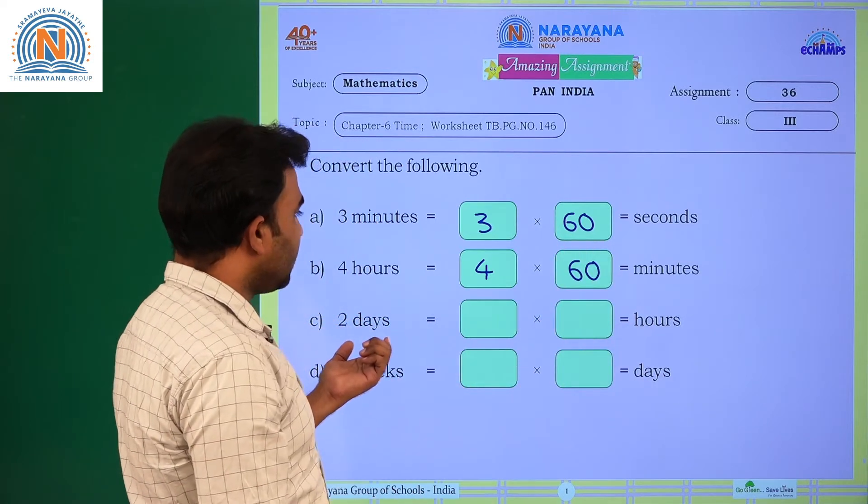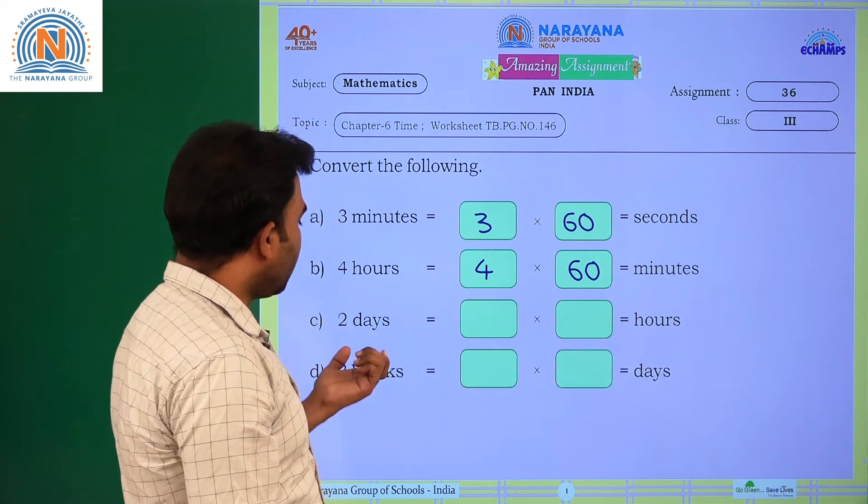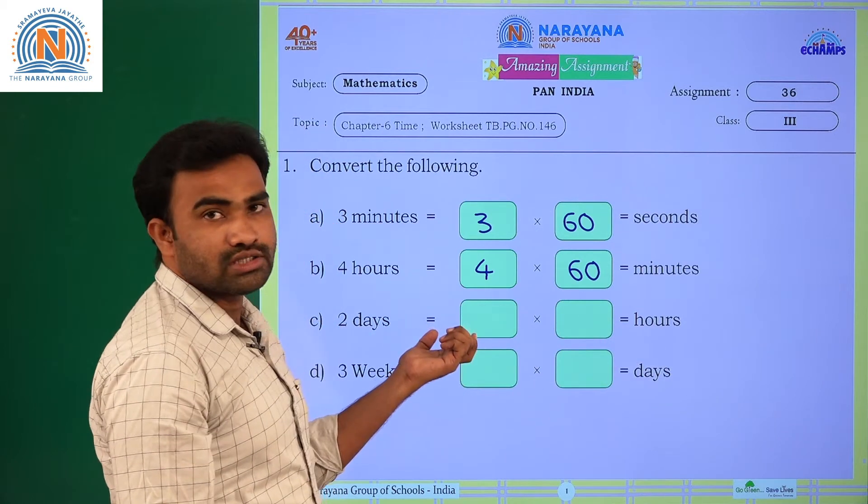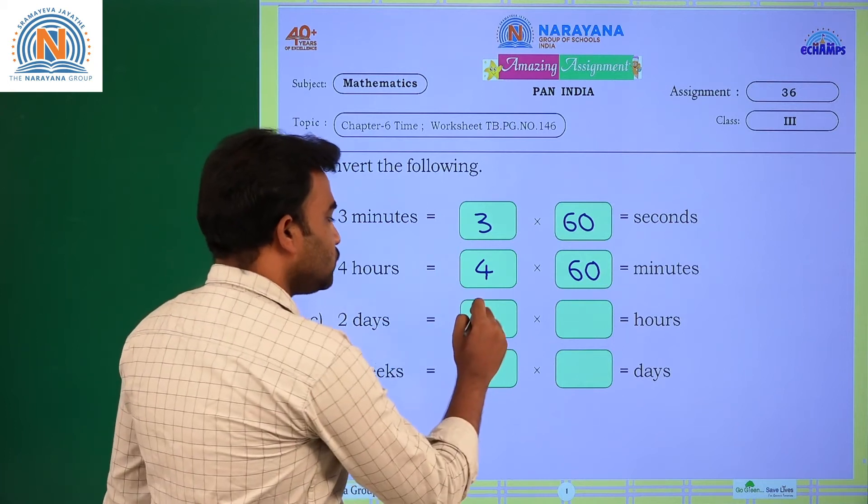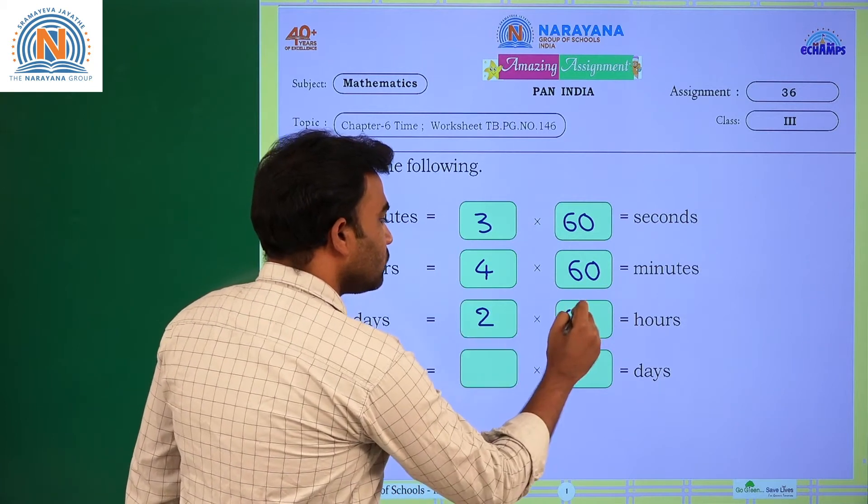Next one, days into hours. One day equals how many hours? 24 hours. Then 2 days equals 2 into 24.